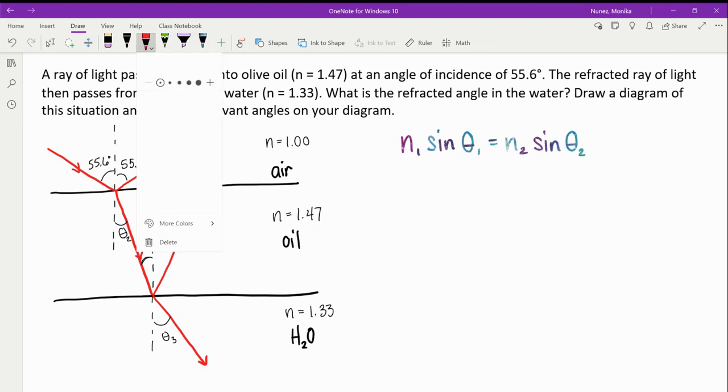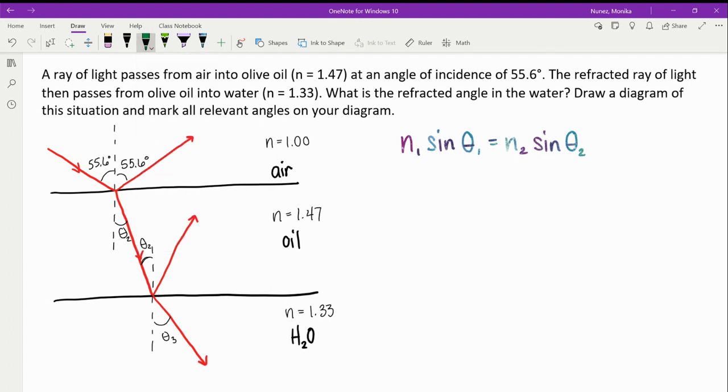For my first example, where that light goes from air into oil, that light is first traveling in air, so that index of refraction is 1, and it makes an angle of incidence of 55.6 degrees with the normal when it is in air. My second medium that it travels into is oil, which has an n of 1.47, and we don't know the angle yet. That's the unknown quantity that we'll be solving for.